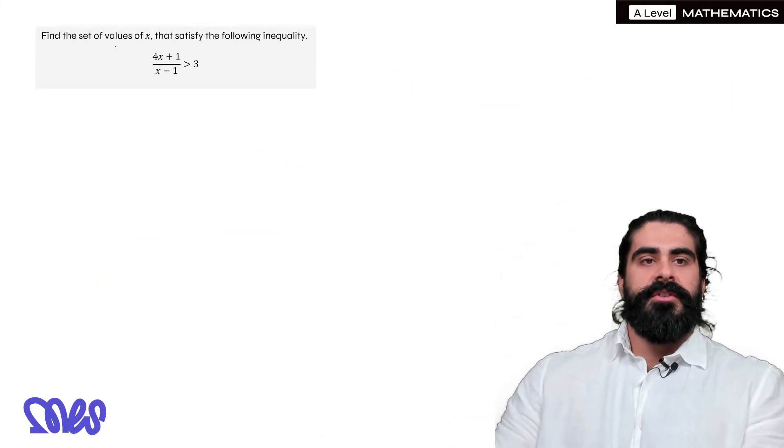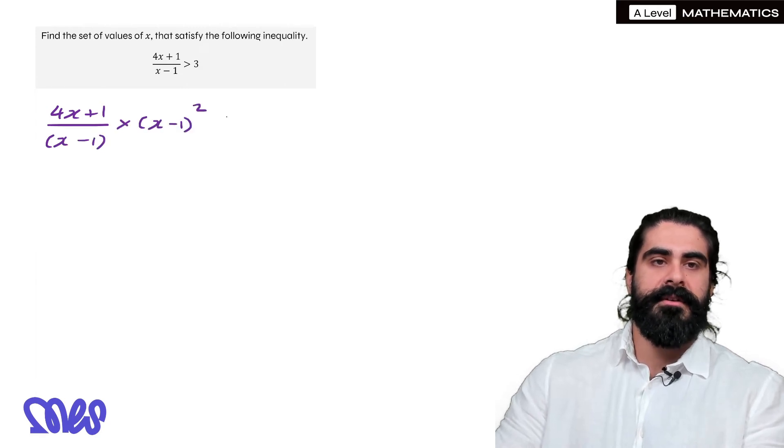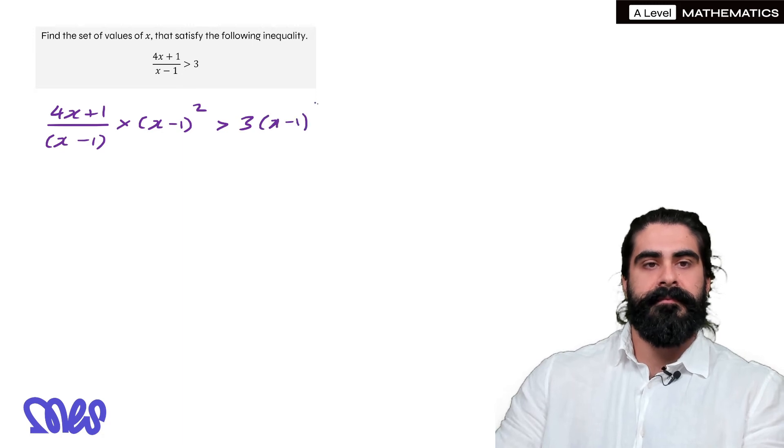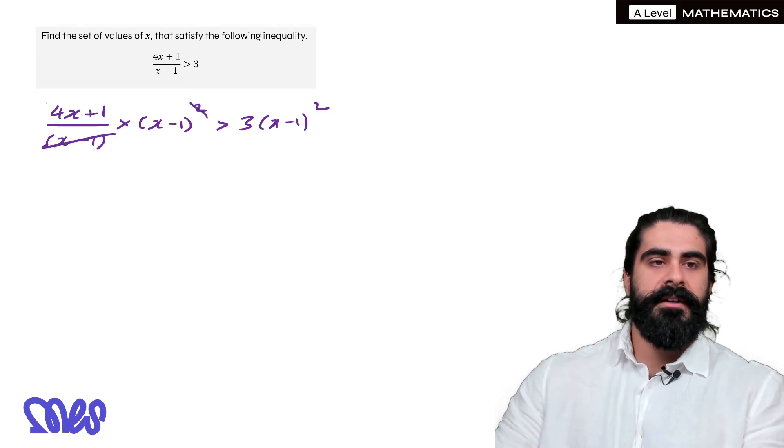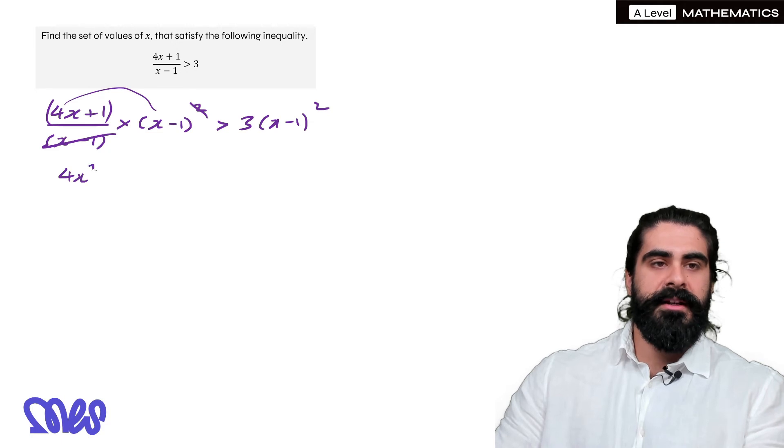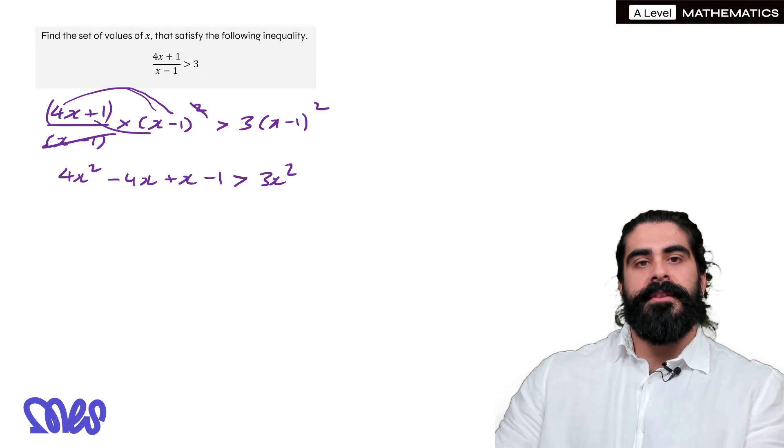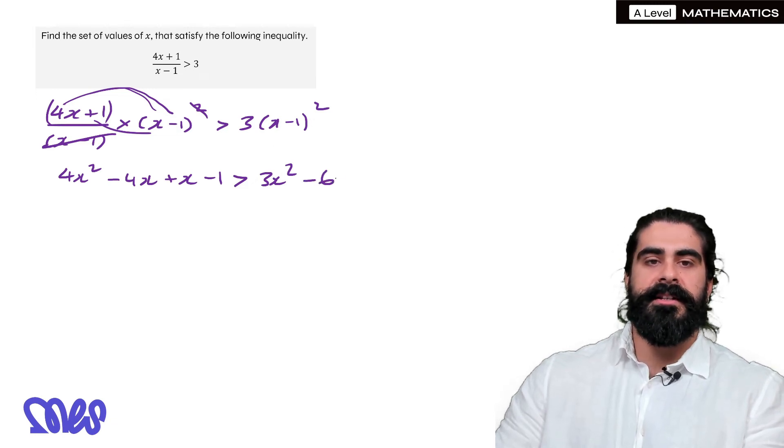Next question, just as extra practice, find the values that satisfy this. So we're going to times both sides by x minus 1 squared. The x minus 1 cancels here. Now we can do all this at the same time, so we're going to expand it. So 4x times x gives you 4x squared, 4x times minus 1 is minus 4x, then plus x minus 1. Now here, x minus 1, when we square that, will be x squared times by 3 is 3x squared. Then we have minus 2x times 3 is minus 6x, minus 1 times minus 1 plus 1 times 3 plus 3.